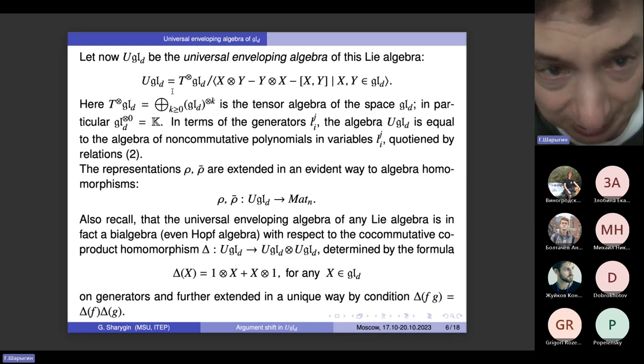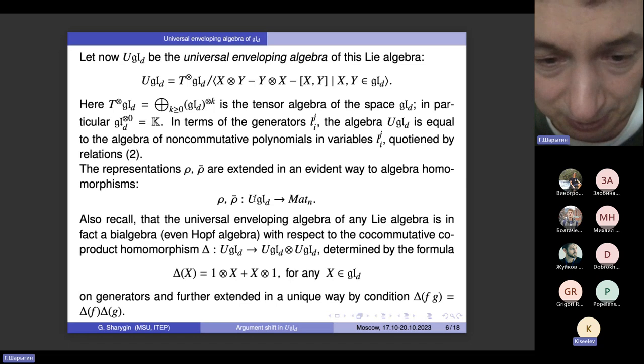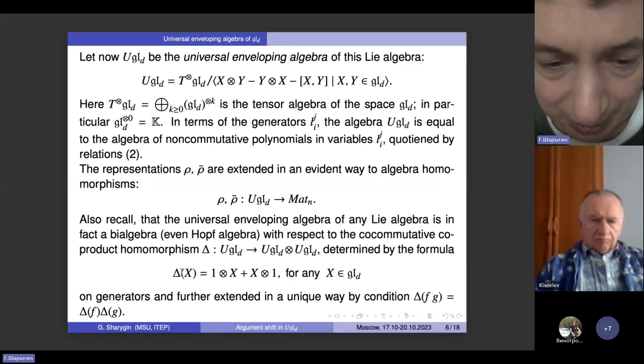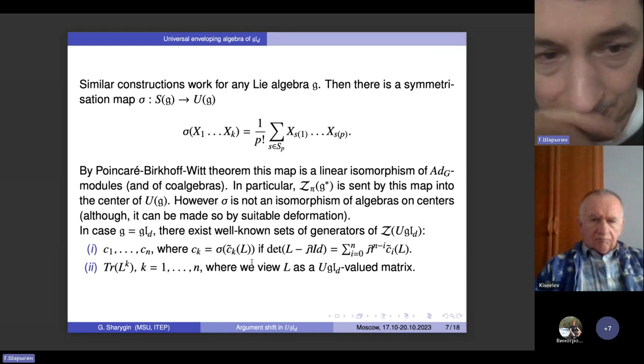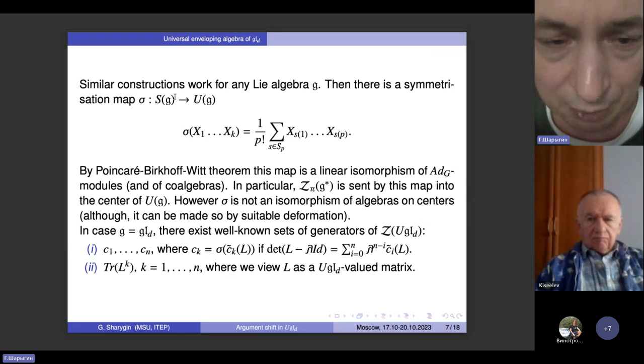As everybody knows, I believe, this algebra is filtered by powers of GLD in this construction, and its associated graded algebra is equal to the symmetric algebra of GLD. Both the representations, Rho and Rho-bar, extend to representations of universal enveloping algebra, and moreover we have the co-multiplication. These are standard facts.